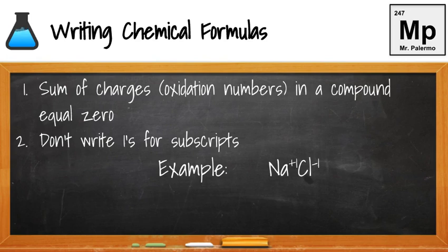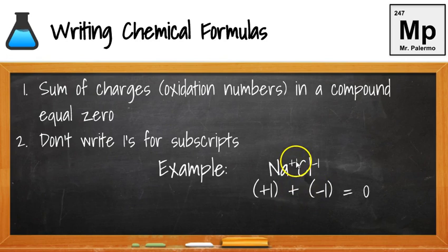For example, combining sodium and chlorine: I write my ions — the sodium ion, Na plus 1, and the chloride ion, Cl minus 1. Below the symbols I write the total charge: plus 1 and minus 1. Plus one and minus one equals zero, so this compound is neutral. I only need one Na and one Cl, so the chemical formula becomes NaCl.